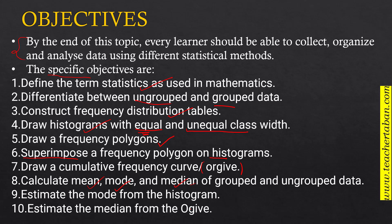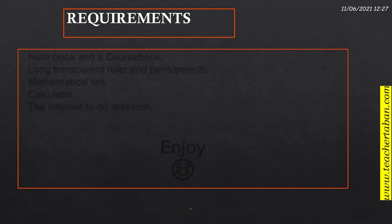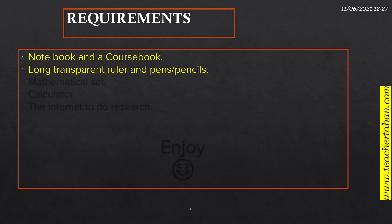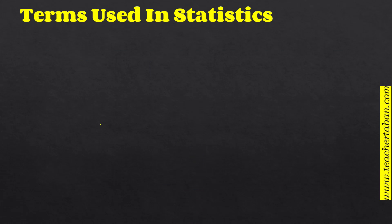The requirements for this class include a notebook and a course book — a textbook. At the bottom of this video you can find a link to one of the textbooks I'll be using. You should also have a long ruler, pens and pencils, a mathematical set, a calculator, and of course internet for research. Let's enjoy the lesson together.